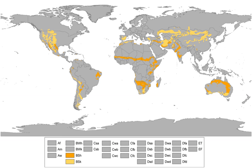In climate classification, three isotherms delineate between hot and cold semiarid climates: the 18 degrees Celsius average annual temperature, or that of the coldest month at 0 degrees Celsius or −3 degrees Celsius, with the warm side of the isotherm defining a BSH climate and the cooler side defining BSK. As a result, some areas can have climates classified as hot or cold semiarid depending on the isotherm used.